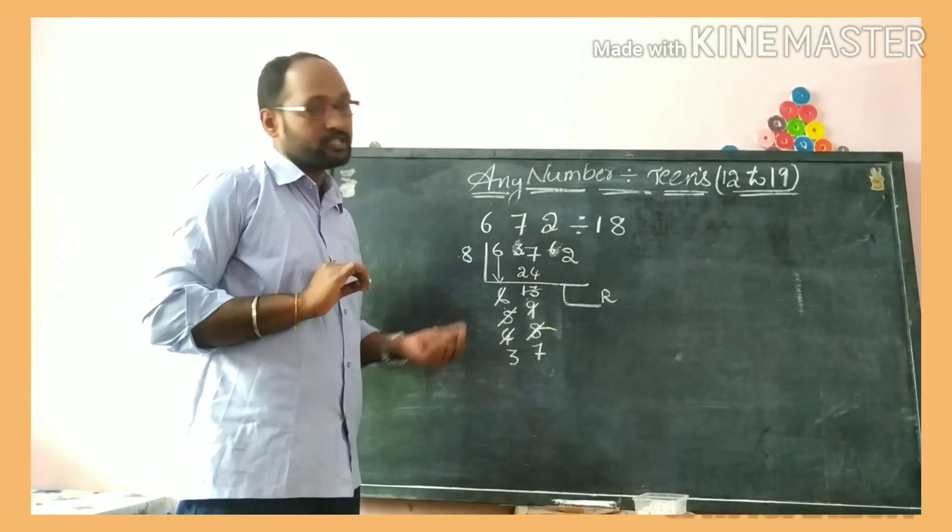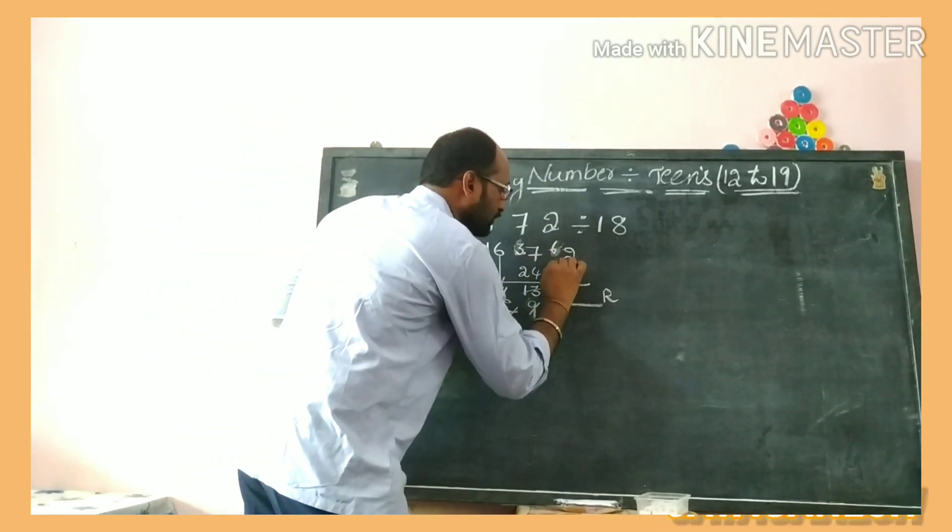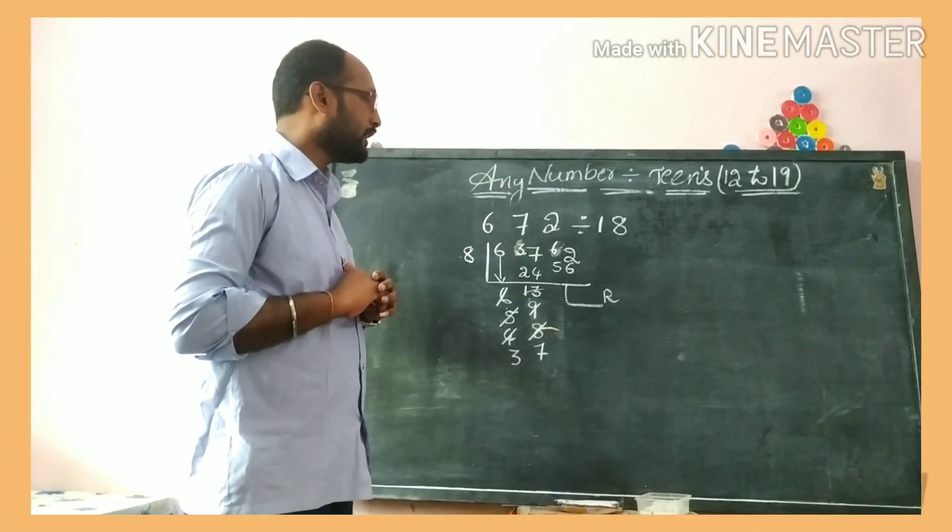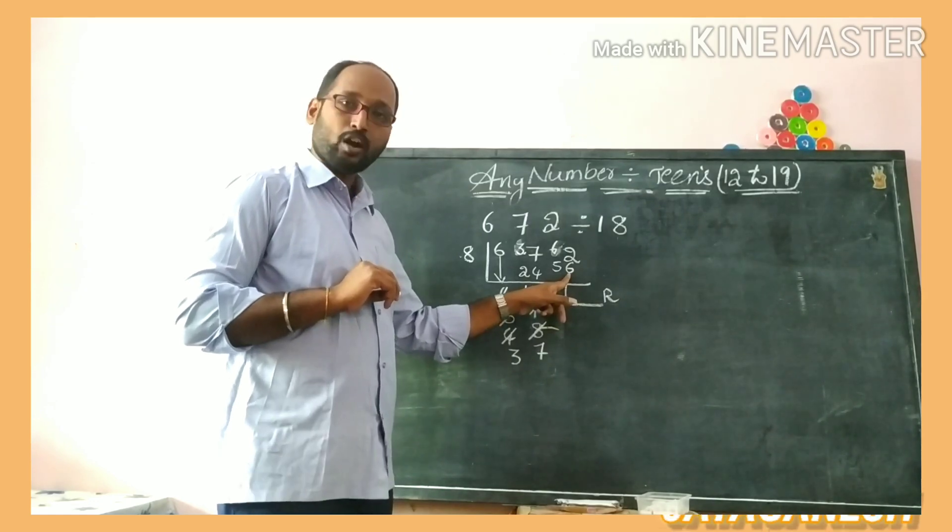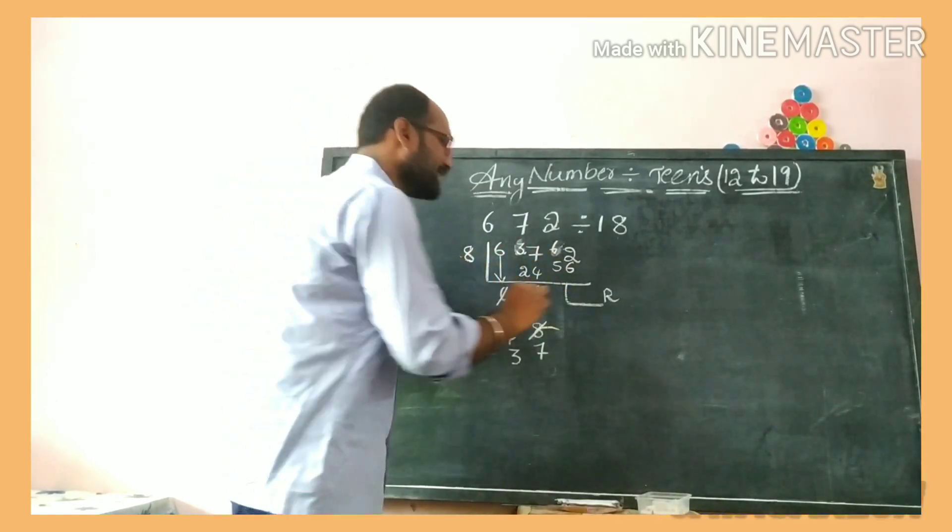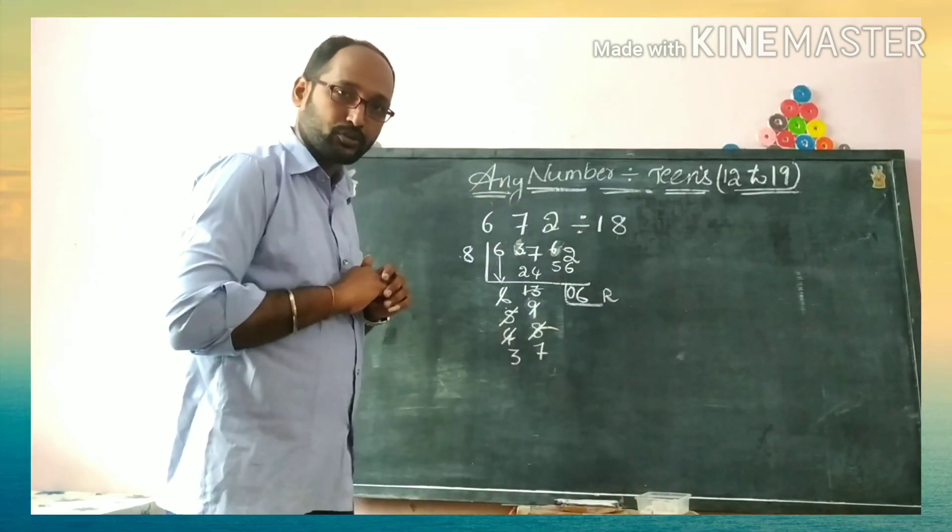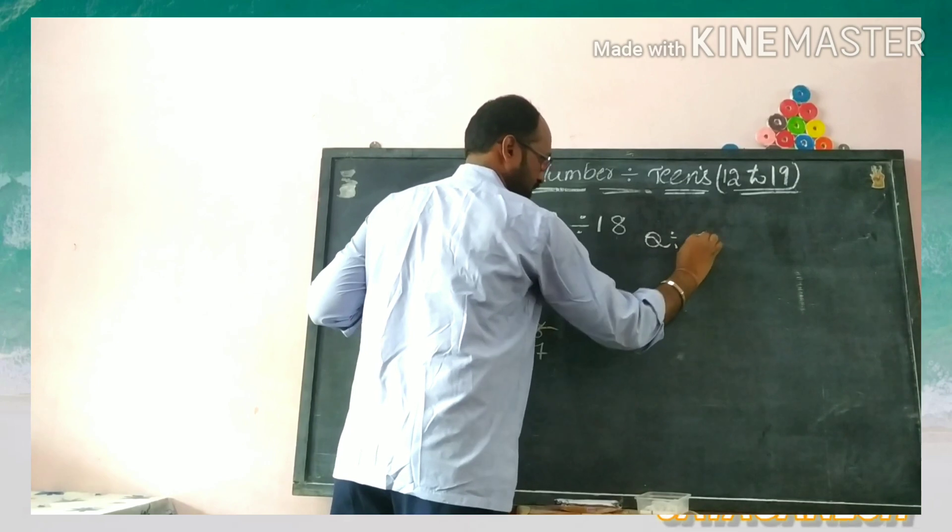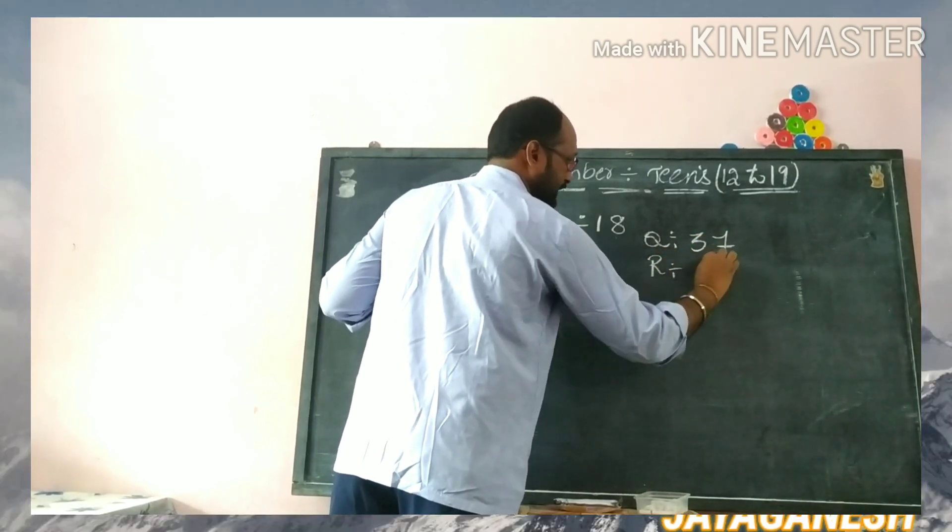Do it. What remainder will you get? 2 minus 6 is not possible, so 12 minus 6 will be 6. Then 5 minus 5 will be 0. Understood, children? Now my question is 37 and the remainder is 6.